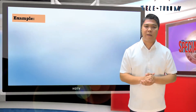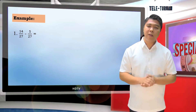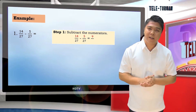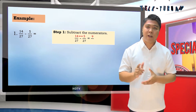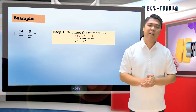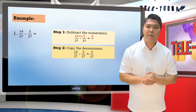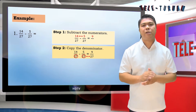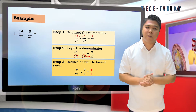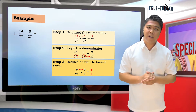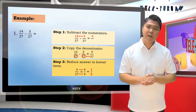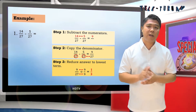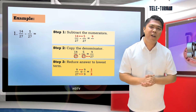Let's have another example: 14 over 27 minus 5 over 27. Step 1: subtract the numerators — 14 minus 5 is 9. Step 2: copy the denominator — their denominator is 27. Step 3: reduce the answer to lowest term — 9 divided by 9 is 1, and 27 divided by 9 is 3. So, 14 over 27 minus 5 over 27 is 1 third. Very good.